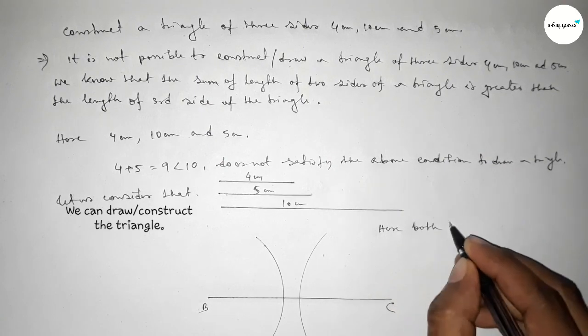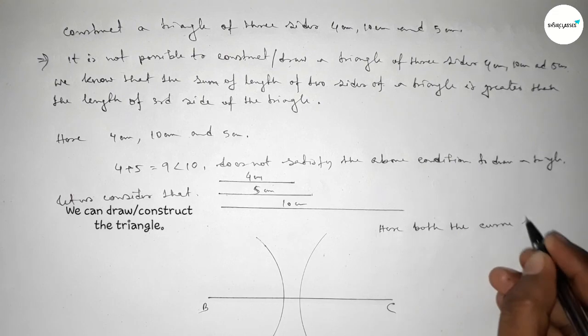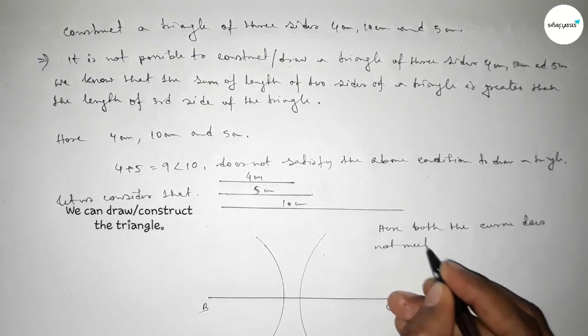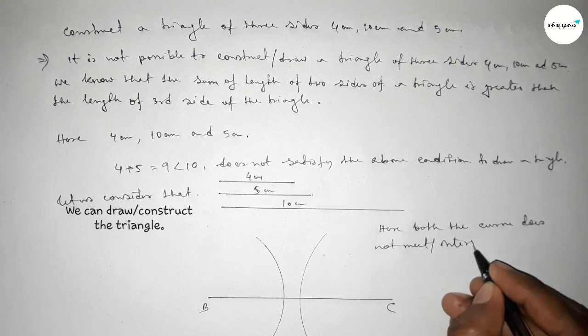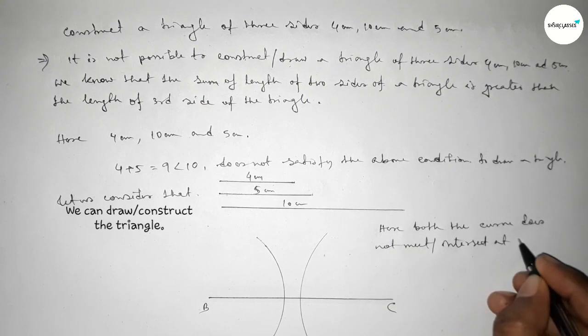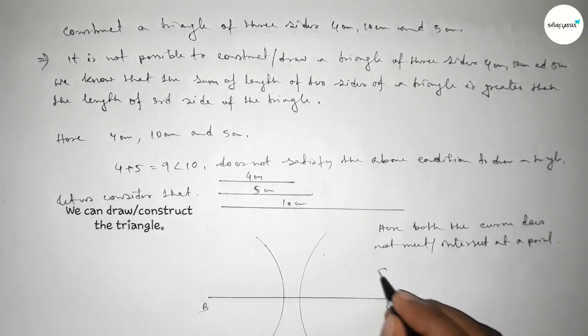So we can see that both the curves do not meet or intersect at a point. So we cannot construct or draw a triangle.